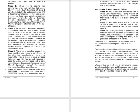Class M allows you to operate a two-wheel motorcycle, a two-wheel motorcycle with a detachable sidecar, or a three-wheel vehicle. Reference SC's Motorcycle and Moped Operator's Manual for specific information. Commercial Driver's Licenses (CDLs): Class A — Any Combination of Vehicles with a Gross Combination Weight Rating (GCWR) of 26,001 or more pounds, provided the GVWR of the vehicle being towed is in excess of 10,000 pounds. Class B — Any Single Vehicle with a GVWR of 26,001 or more pounds, or any such vehicle towing a vehicle not in excess of 10,000 pounds GVWR. Class C — Any Single Vehicle or Combination of Vehicles that does not meet the definitions of Class A or B, but is designed to transport 16 or more passengers, including the driver, or is placarded for hazardous materials. Reference SC's Commercial Driver License Manual for specific information to get a Class A, B, or C license.